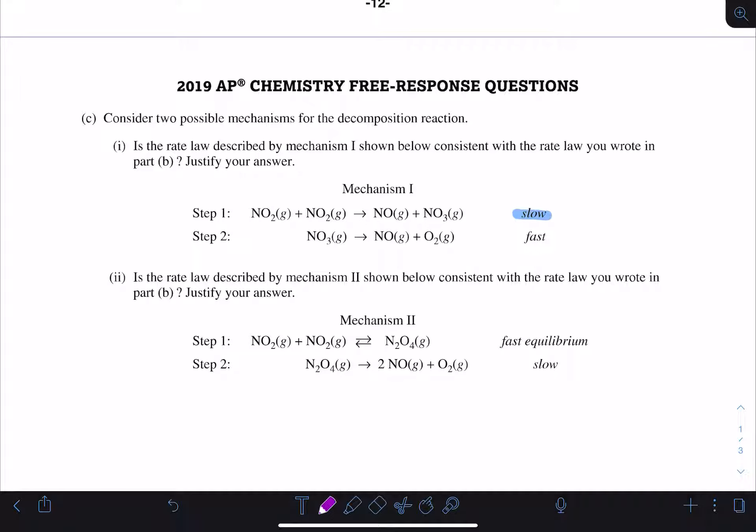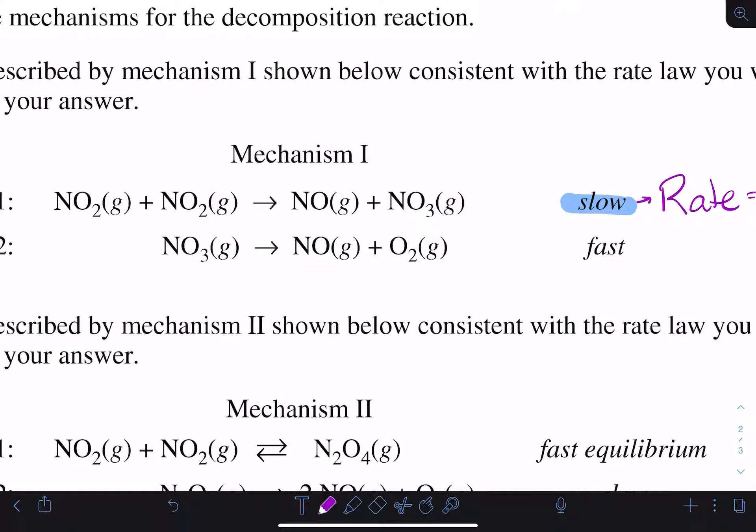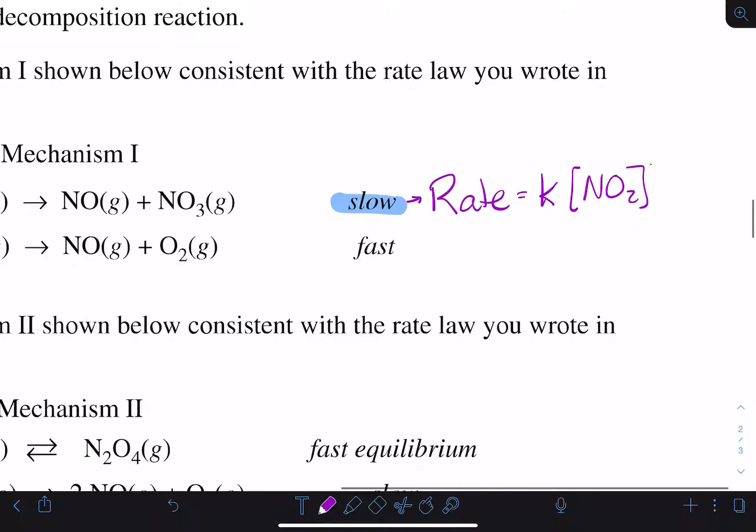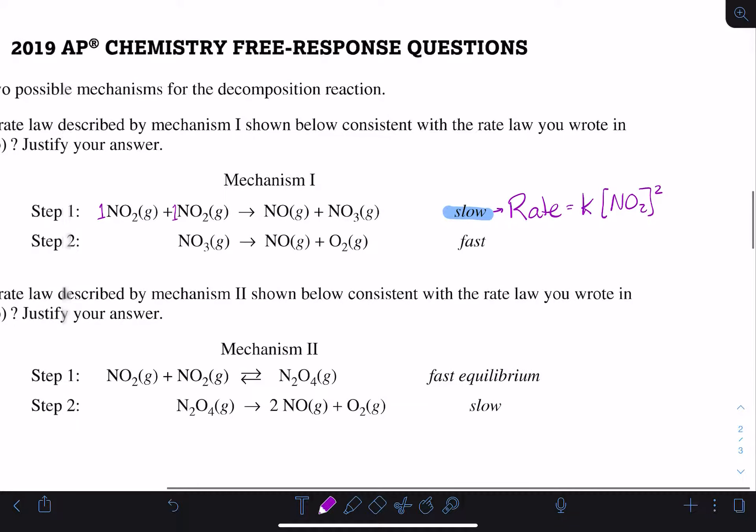For this one, the rate of our slow step is going to be the rate constant times NO2 times NO2 again, so this will be squared. When we know the mechanism for a reaction, we can write the rate law for each step based on just the coefficients. The stoichiometry of this reaction means that we can figure out the reaction orders based only on that stoichiometry.